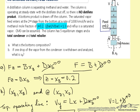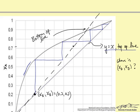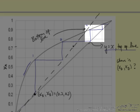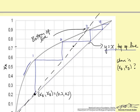We are told there are five equilibrium stages. Counting the stages already drawn: one, two, three, four. To complete the fifth stage, we end right about at XD ≈ 0.98. So XD is equal to 0.98.